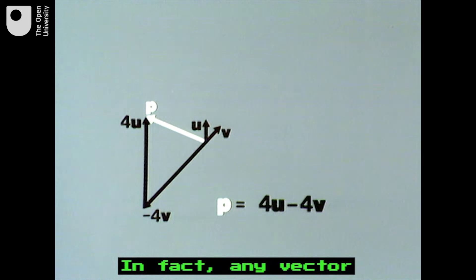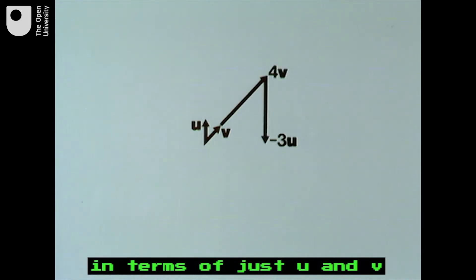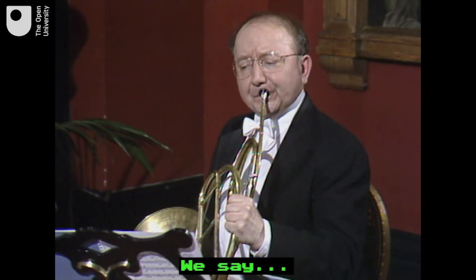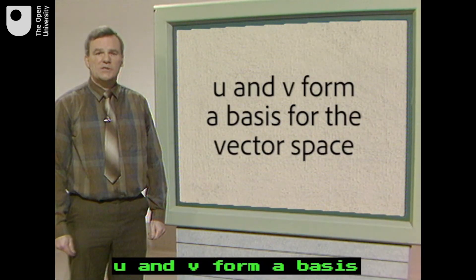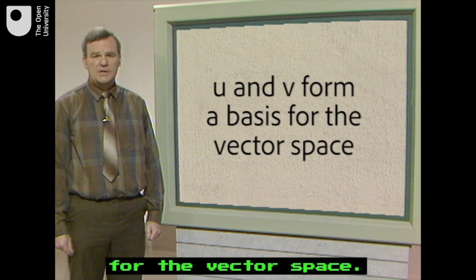In fact, any vector in 2D space can be written in terms of just u and v. We say u and v form a basis for the vector space.